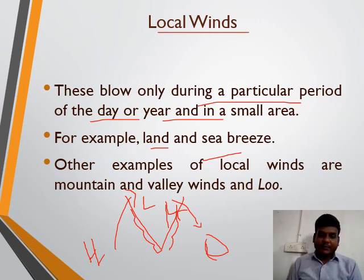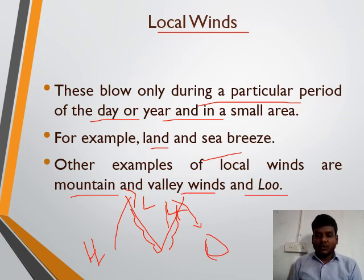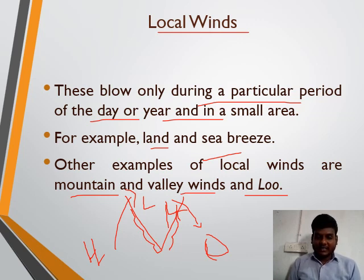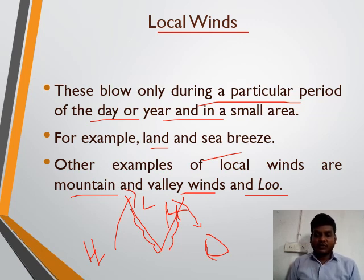Other examples of local wind include mountain valley wind. 'Loo' is also a local wind — you cannot feel it in the whole country, only in a small particular area, such as Rajasthan and the northern part of India, where people feel this hot wind in the summer season. We call it Loo.